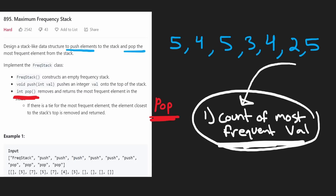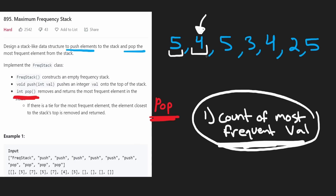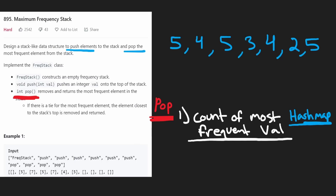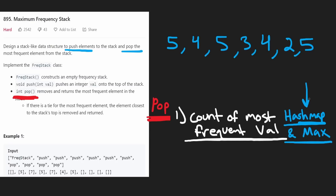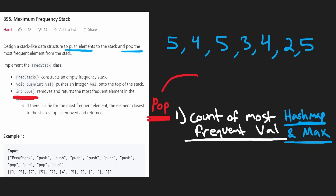How exactly are we going to know the count of the most frequent element? As we add values we can keep track of the count of each value we've added so far — that's pretty standard. We can have a hash map counting each value and also a separate variable for the maximum count. As we add a value we'll increment the count by one, and if that count is greater than our maximum, we'll replace the maximum. This was probably the easy part.